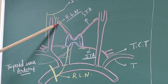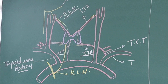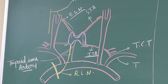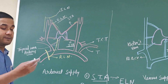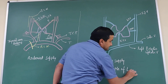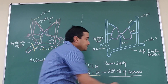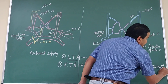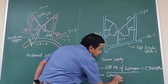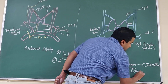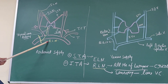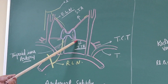In summary: for the superior thyroid artery, ligate close to the gland; for the inferior thyroid artery, ligate away from the gland. The recurrent laryngeal nerve supplies all muscles of the larynx except the cricothyroid, which is supplied by the external laryngeal nerve. The recurrent laryngeal nerve also provides sensory supply to the larynx below the vocal cord. The relation between the recurrent laryngeal nerve and the inferior thyroid artery is very important.